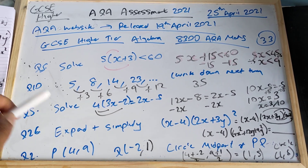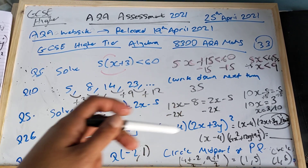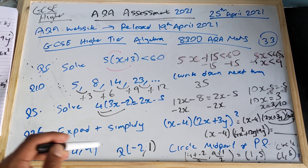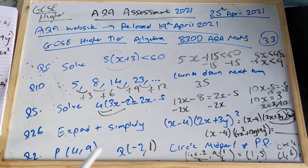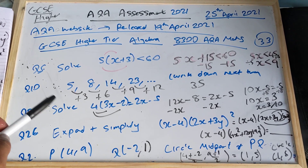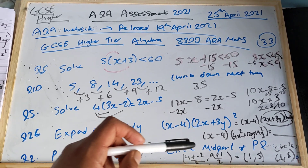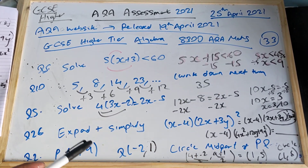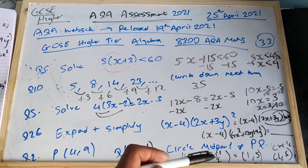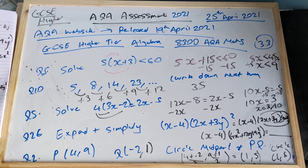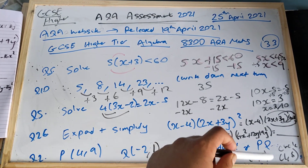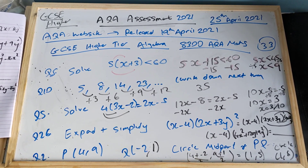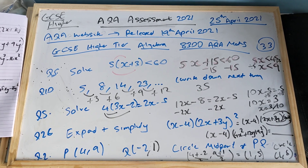Question number two: find the midpoint of PQ. To work out the midpoint, add the x-coordinates and halve it, add the y-coordinates and halve it. So 4 add −2 is 2, divided by 2 is 1. Nine add 1 is 10, divided by 2 is 5. So I'd circle the coordinates (1, 5) — that's the midpoint of PQ.